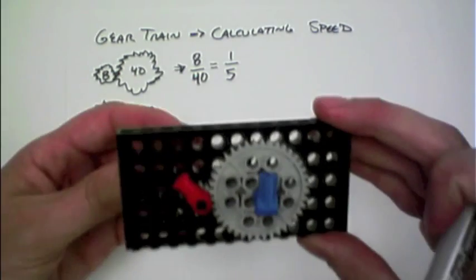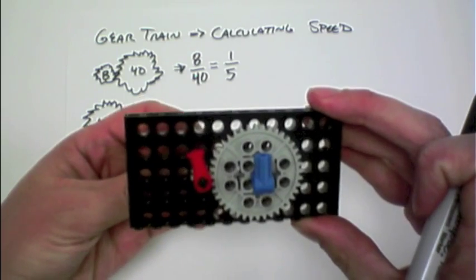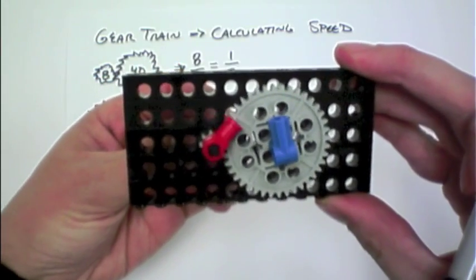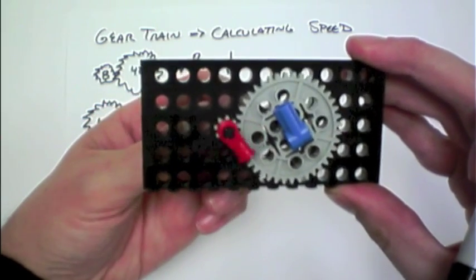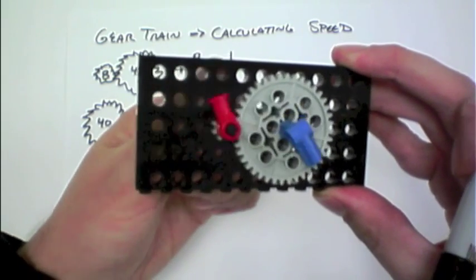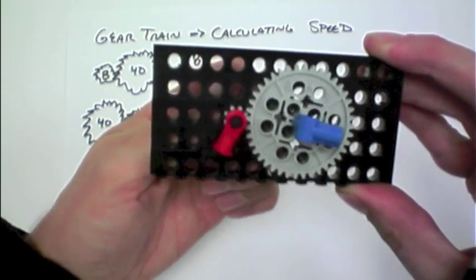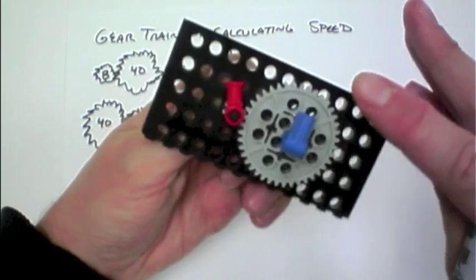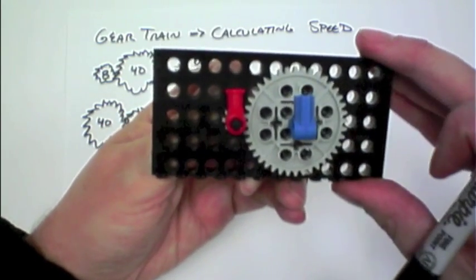And so we can watch that here. If I turn the 8-tooth gear, the smaller one, five times, we'll watch how fast the blue one goes. There's 1, 2, 3, 4, and 5, and the blue one, the 40-tooth gear, rotated one full time.